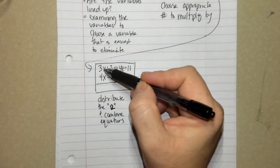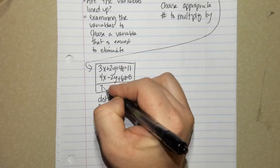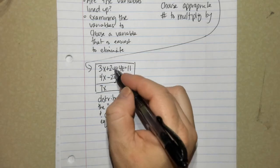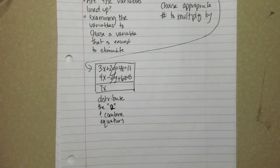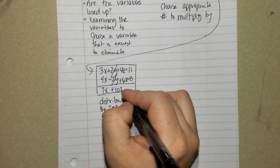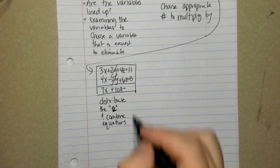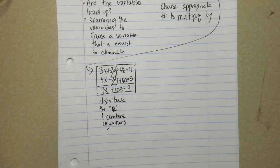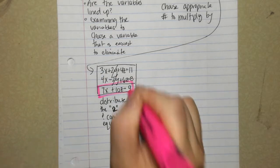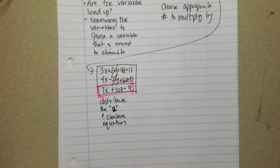When I combine, 3x and 4x is 7x. Positive 2y and negative 2y cancel. That was our goal. 4z and 6z is positive 10z. And 11 and 8 is 19. Now this is where you're going to take the highlight off and box it in. When I refer to the boxed equations, this will be one of them. If you don't happen to have a highlighter, just box it in with a pencil extra dark.